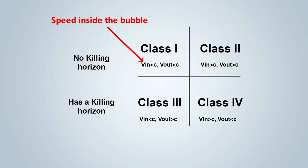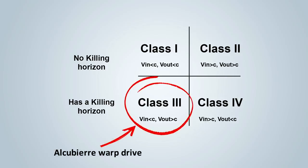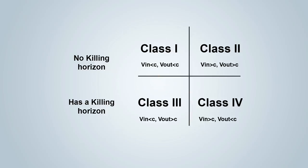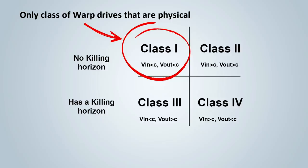They actually made four classifications of warp drives. These classes are based on the speed inside the bubble and speed outside the bubble, represented by V-in and V-out. The Alcubierre solution is just a class 3 warp drive in their classification, where the person inside is moving less than the speed of light, but the bubble is moving faster than the speed of light. In this classification, however, only class 1 warp drives are physical because they can be made from positive energy and real matter, and they don't travel faster than the speed of light.